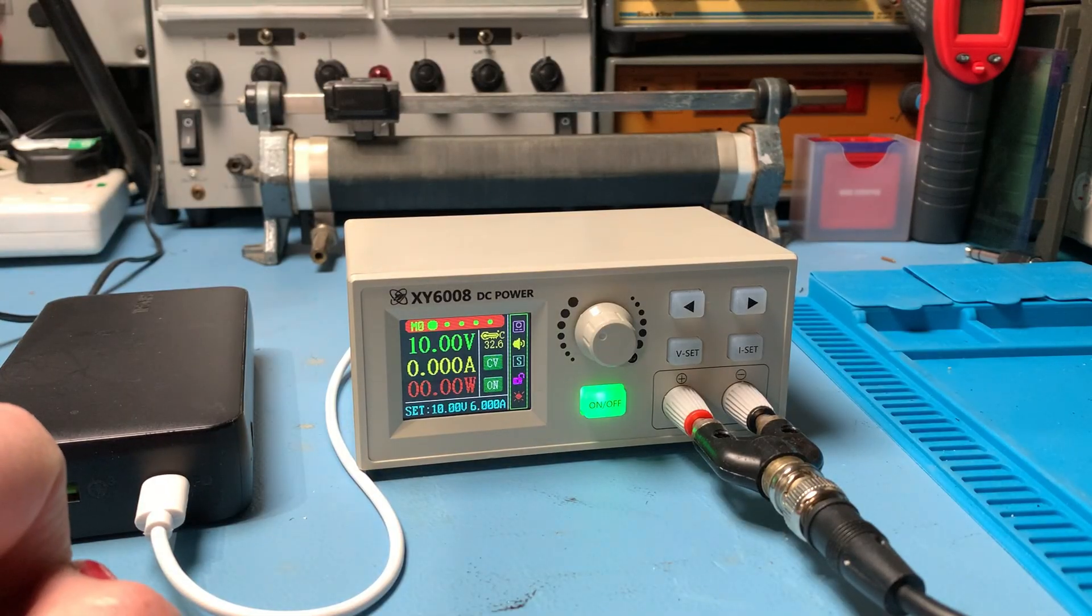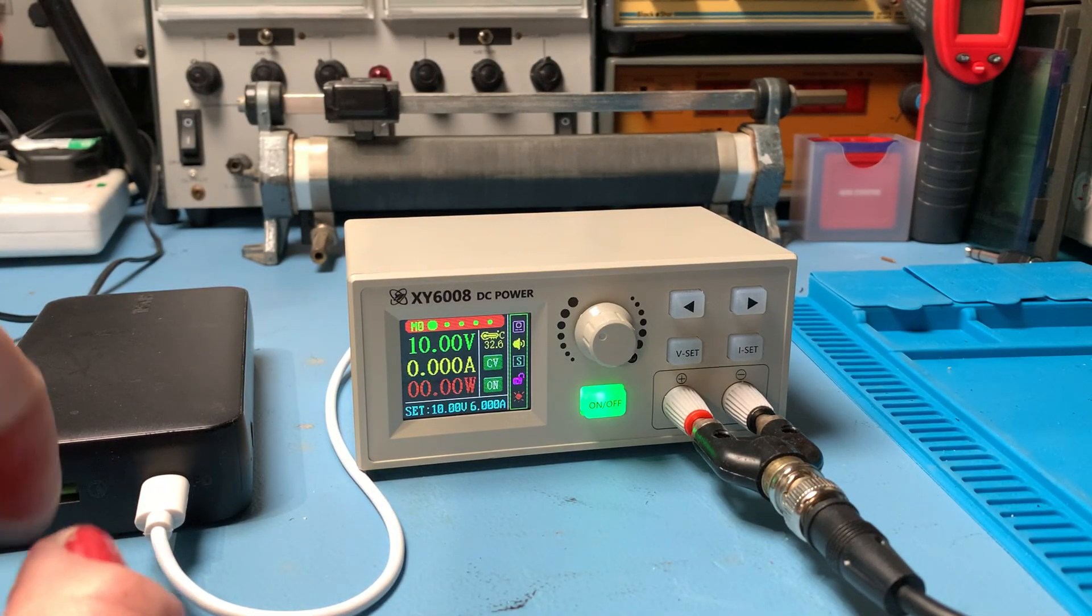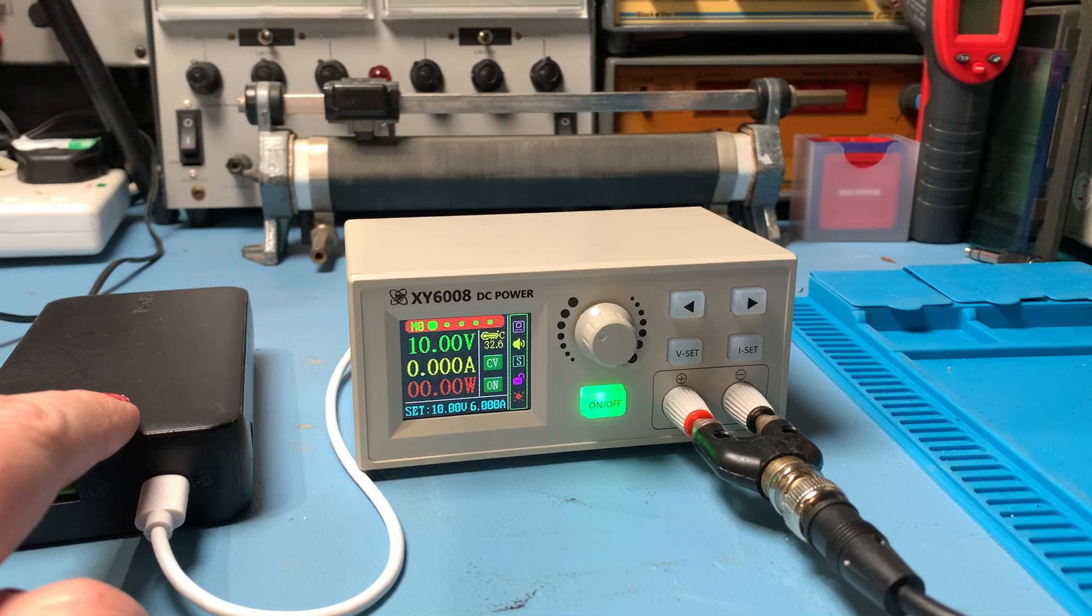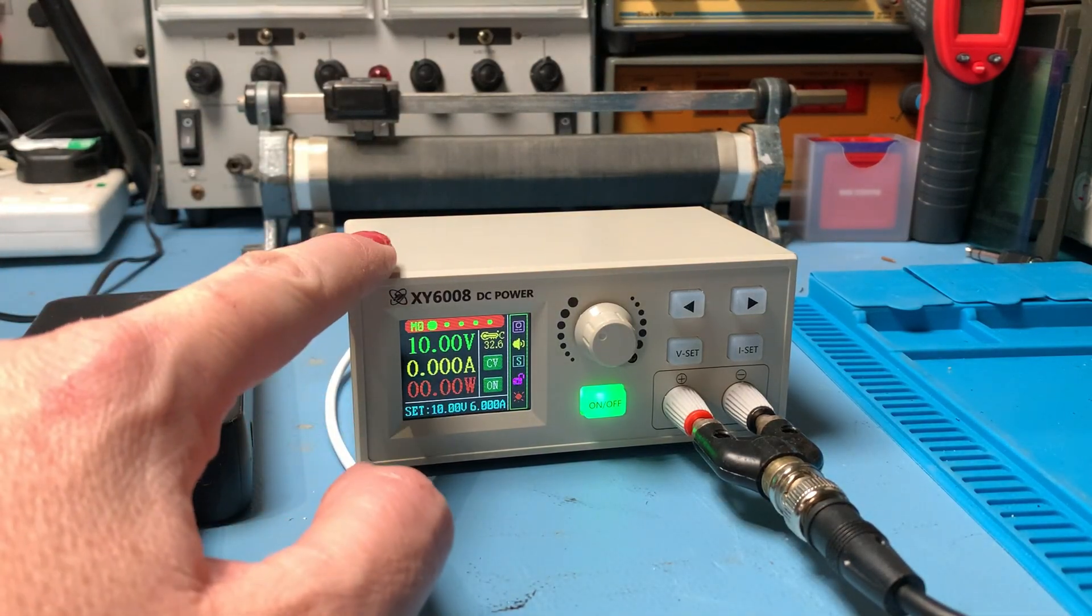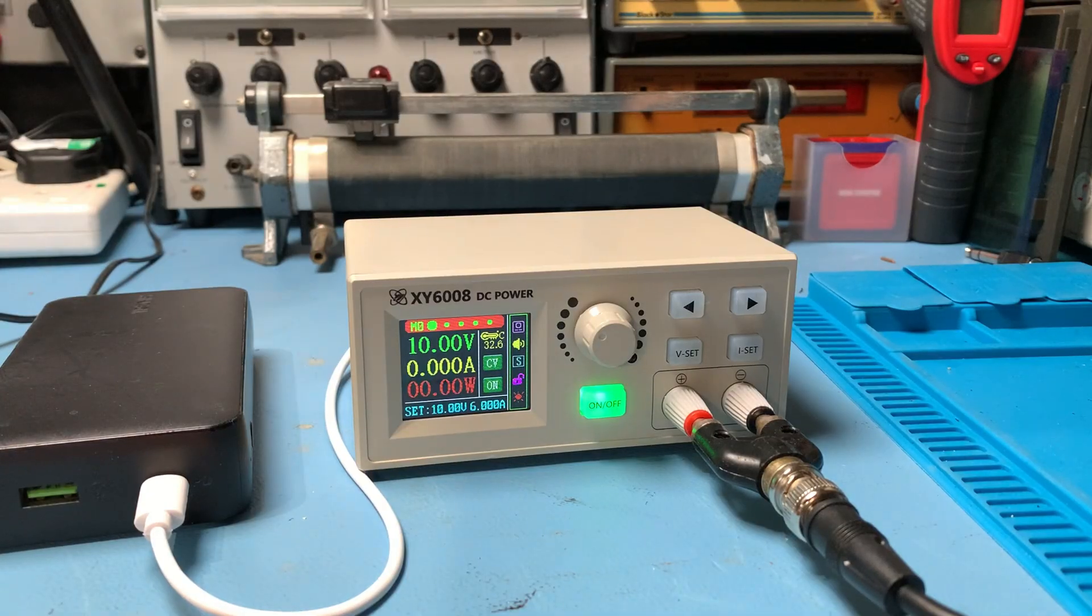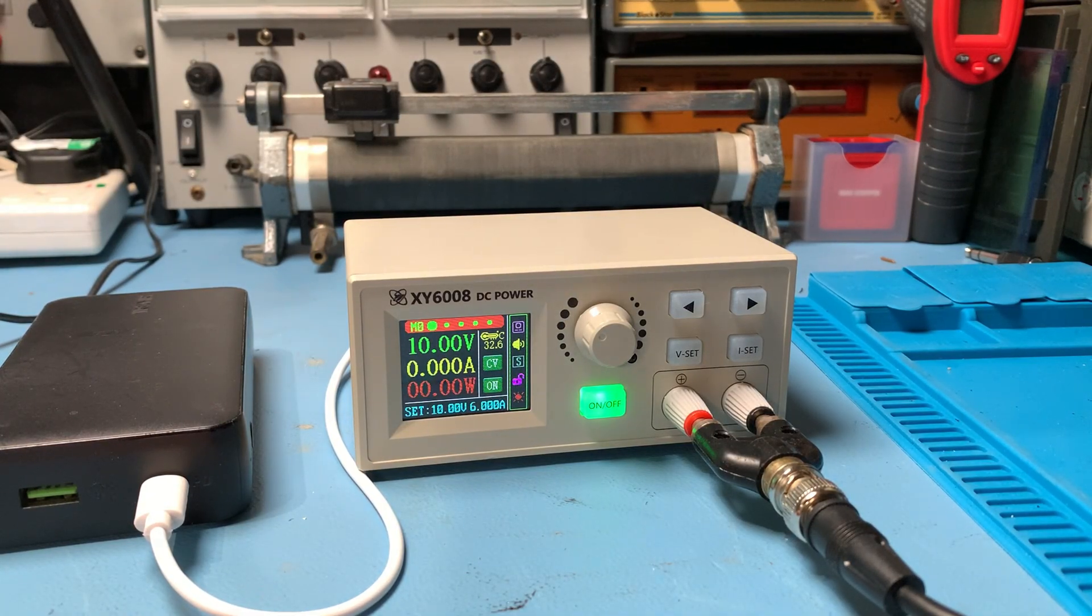So in conclusion, linear power supply and battery pack don't add any noise to the XY6008. But on a laptop adapter, which is a switch mode power supply in its own right, adds about five millivolts roughly to the noise. Well, there you go. I hope that's answered some of your questions regarding alternative power sources for this little converter unit, and also about the noise and the ripple on the output.